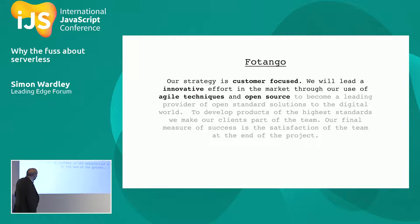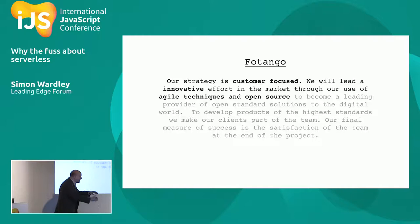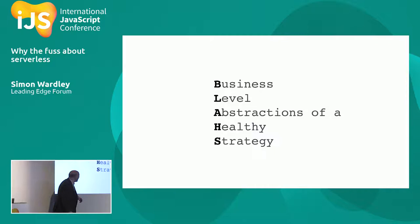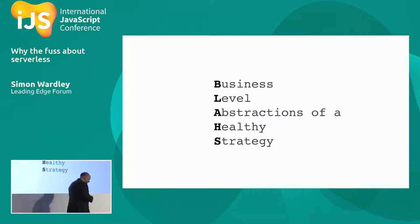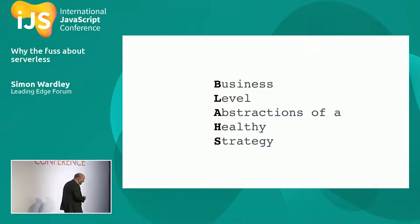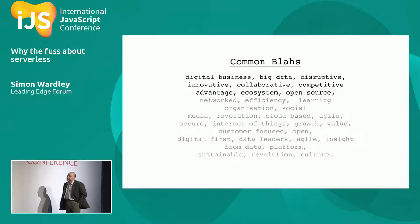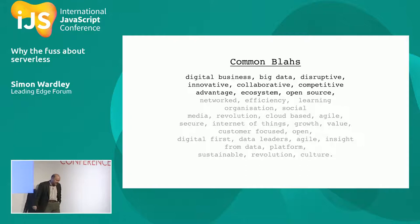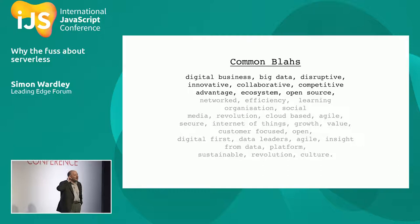In an effort to understand what I should have been doing, I started going around recording other CEOs talking about strategy. I would take a tape recorder and listen to the common words they used — I called these 'Business Level Abstractions of a Healthy Strategy,' or BLAS. Last time I did this in 2014, the common BLAS were: digital business, big data, disruptive, innovative, collaborative, competitive advantage. If I did it today you'd expect to hear AI and blockchain.